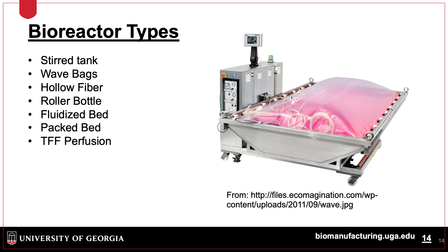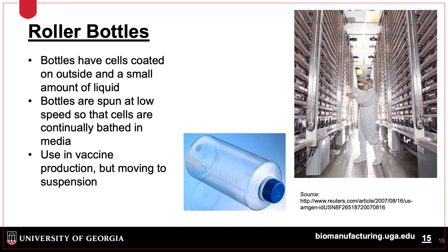There are a variety of systems used to produce mammalian cells, including stirred tank reactors, wave bioreactors, hollow-fiber systems, roller bottles, and other types of bioreactors. Roller bottles, as the name suggests, roll in place. The bottles are filled with a small amount of media and laid on their side; the rolling is required to wet cells coated around the inside of the bottle. This is a relatively simple way to grow cells and, although labor-intensive, is used extensively in vaccine production.